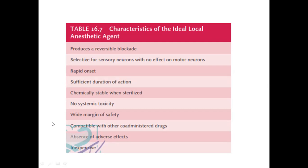Coming to the characteristics of ideal local anesthetic agent — it must be reversible. What is the use of this local anesthetic? It stops the nerves from conducting the signal from a muscle or end organ to the brain, so the sensation is not felt by the brain. It must be reversible; it should not be permanent, otherwise it would be very, very difficult for living.